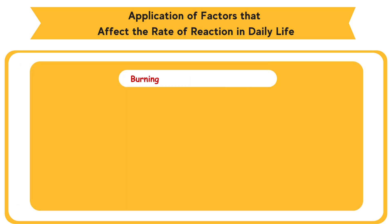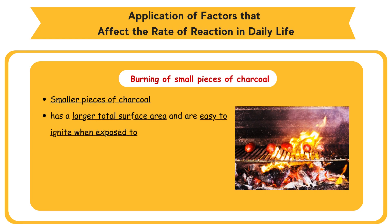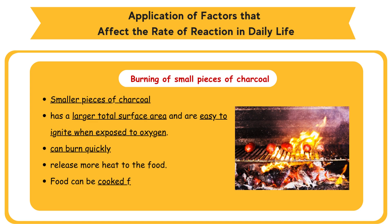Burning of Small Pieces of Charcoal. Smaller pieces of charcoal have a larger total surface area and are easy to ignite when exposed to oxygen. Therefore, smaller pieces of charcoal can burn quickly and release more heat to the food. Food can be cooked faster because more heat is absorbed per second.